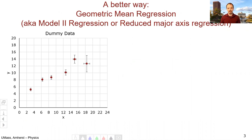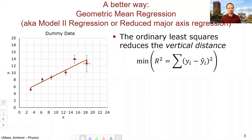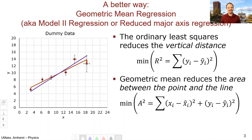Here's the dummy data we've been using throughout this lab, plotted y as a function of x as usual, and here is our ordinary least squares line, which reduces the vertical distance between each point and the line, completely ignoring the distance in x. The geometric mean regression reduces the area between the point and the line. Looking at the second point from the left, we look at the distance both in x and in y, so we get a little square where one side is the distance in y between the point and the line, and the other side is the distance in x.